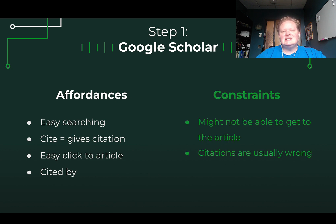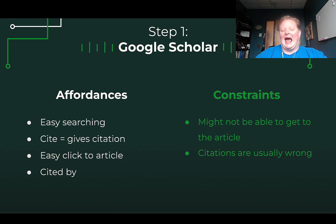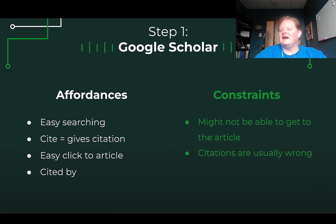The constraints of Google Scholar are that you might not be able to get to the actual article, and even though it has citations, they are often somewhat incorrect. It gives you about an eighty to eighty-five percent accurate structure, but you still need to check it.